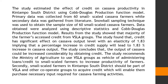Primary data was collected from 60 small-scaled cassava farmers while secondary data was gathered from literature. Snowball sampling technique was used to obtain the sample size of 60 small-scaled cassava farmers. Data obtained were analyzed using descriptive statistics and the Cobb-Douglas Production Function Model.